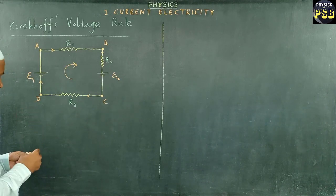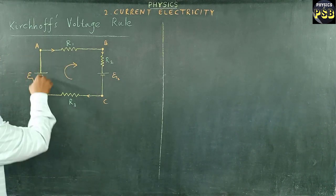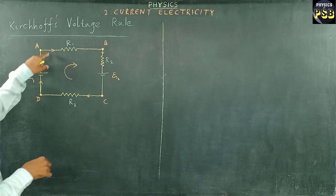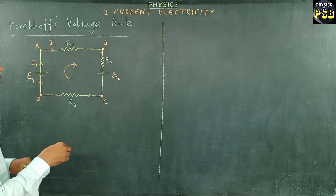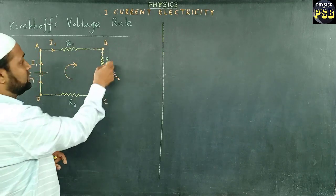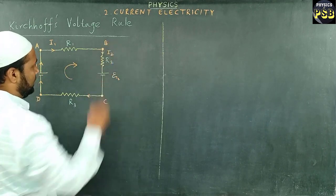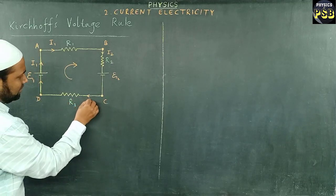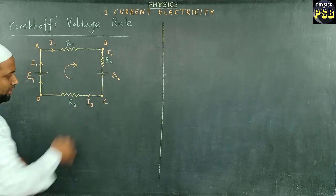Now, the current supplied with this one is taken as I1, so it remains the same at this point, so I1. The current flowing through this resistor is I2. Here is I2. And the current flowing through this resistor is taken as I3.